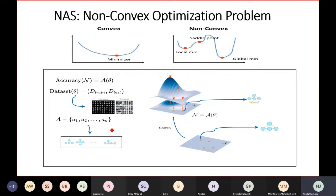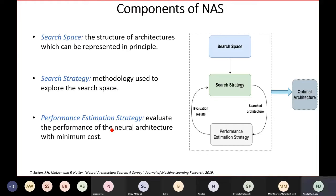Going into the details of the various techniques employed in neural architecture search, we want to know the basic building blocks. Hutter says three dimensions need to be explored: search space, search strategy, and performance estimation strategy.